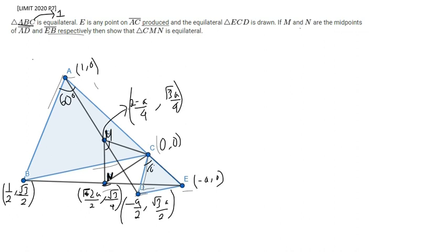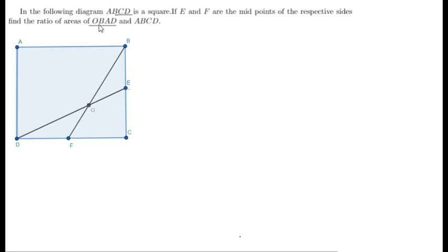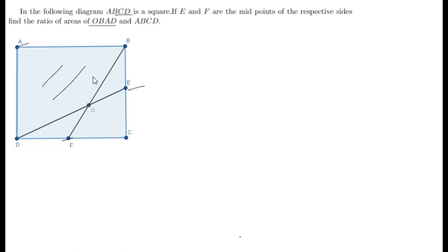We are done for this problem. Let's move on. Here is our next problem — it's a bit of an easy problem. Given ABCD is a square, and E and F are the midpoints.